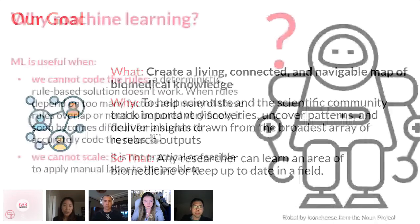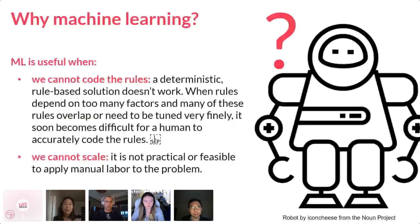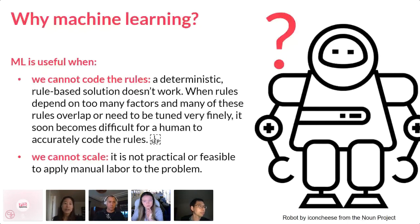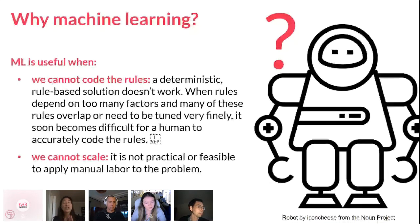The question we always ask ourselves is: why machine learning? It's a tool, and as all tools are, they're useful for the purpose that they serve. Would you use a hammer to drink soup at dinner? Machine learning is not a solution for every type of problem. It's useful when we cannot code the rules, when a deterministic solution doesn't work because it's too complicated — too many factors, overlapping rules, continual tuning needed. It's also useful when it is not practical or feasible to apply manual labor to the problem — this is a simple scaling issue.